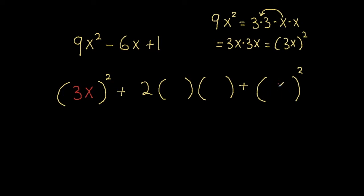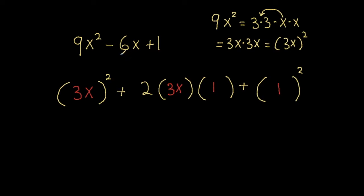Let's test out 1 first. That's the first question answered: are there two things being squared? Yes — 9x squared and 1. Now we ask: is the middle term two times the first term being squared times the second term being squared? So is negative 6x equal to 2 times 3x times 1? Well, 2 times 3x times 1 gives us positive 6x, but we need a negative 6x.